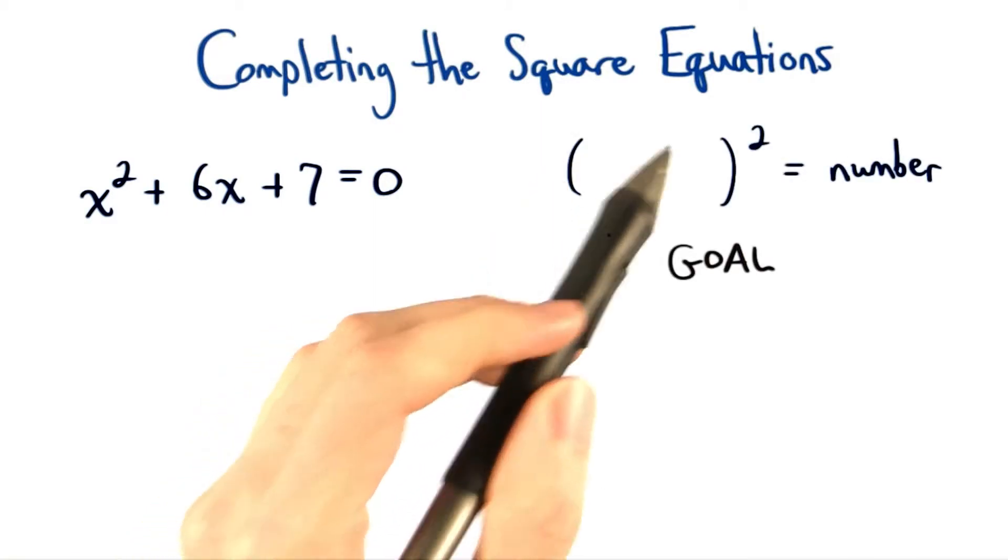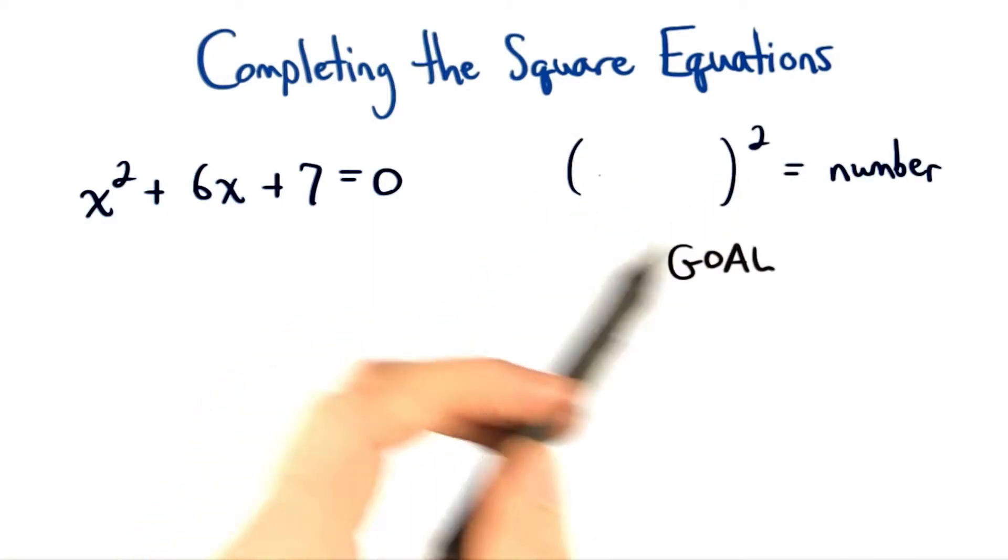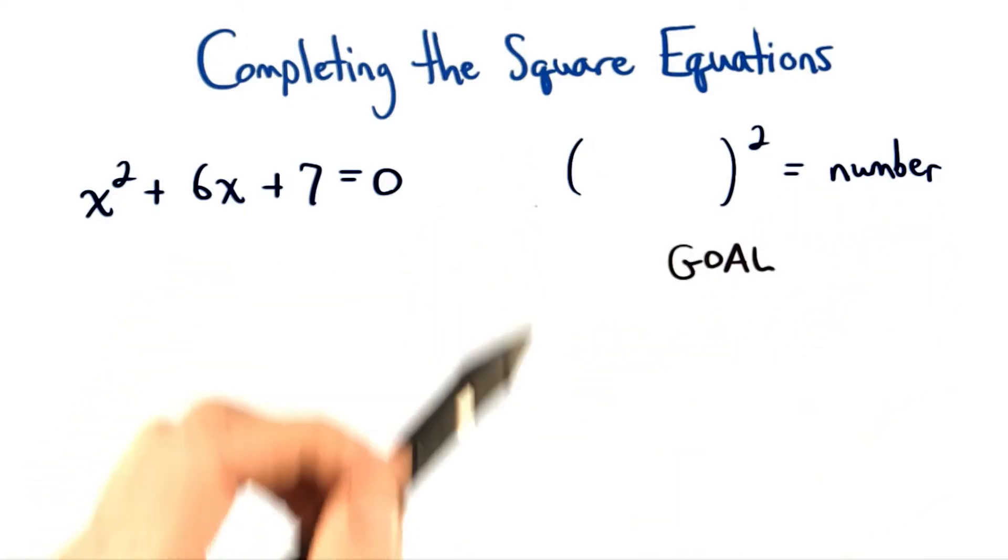In other words, our goal is to make the left side look like a perfect square, and the right side to be some sort of number. Then we could use our square root method that we learned before to continue solving.